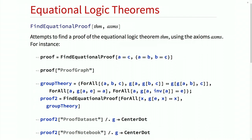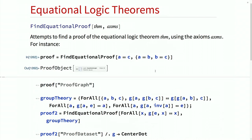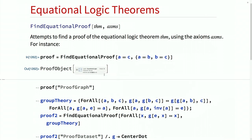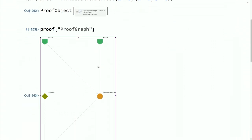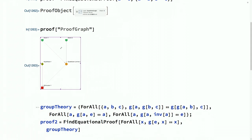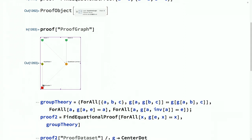In its simplest case, FindEquationalProof takes essentially the same syntax as FullSimplify. You give it a statement you want to prove, like A equals C, and a list of assumptions, like A equals B and B equals C. So let's prove a trivial theorem representing transitivity of the equality predicate. We get back a proof object telling us there were five steps in that proof, and we can get back a graphical representation showing the two axioms, the hypothesis A equals C, and an intermediate substitution lemma.